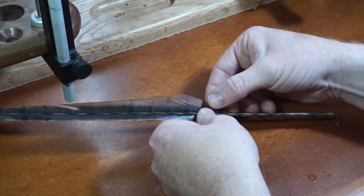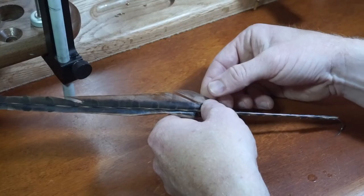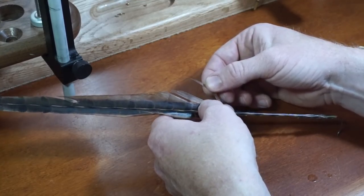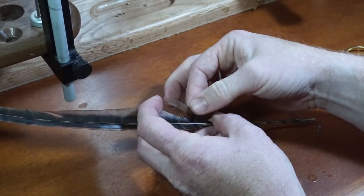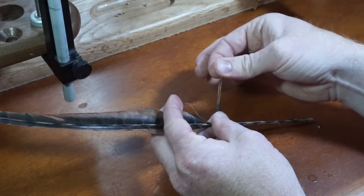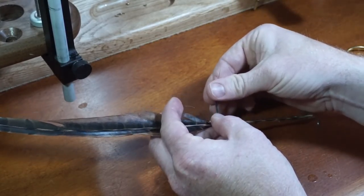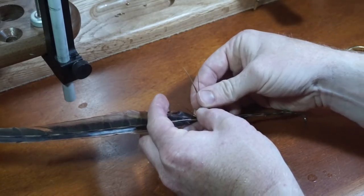Trim a few more strands of pheasant tail. This time you want more than the tail. In this case I'm using 6, but 6-10 strands depending on your hook size will work. Stroke them up the same way as before and trim off the base.